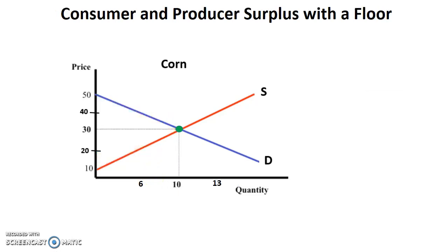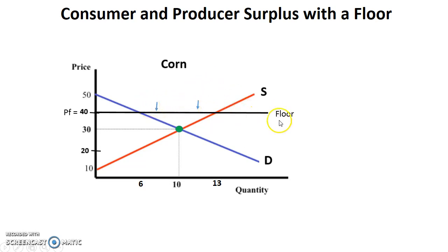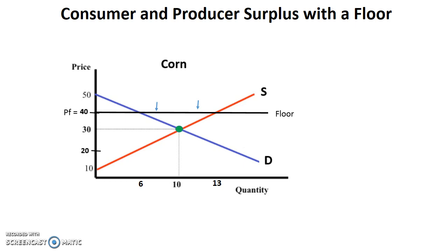Now let's look at it with the floor. A binding floor is set above equilibrium — in this case at $40 — and the government is saying you're not allowed to drop the price any lower than $40. A great example of a price floor is minimum wage: even though the market says labor is worth a certain amount, the government says you have to pay at a higher price, creating a disequilibrium between quantity supplied and quantity demanded. Another good example is agriculture, where the government sets price floors to help farmers survive in their industry.